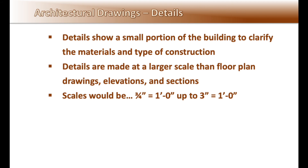Details show a smaller portion of the building to clarify the materials and type of construction. Details are made at a larger scale than floor plan drawings, elevations, and most sections. Typical scales for details would be three-quarters of an inch equals one foot, up to three inches equals one foot, depending on how much detail needs to be shown. A wall section might be three-quarters of an inch equals a foot, while the blow-up of the parapet wall at the top would be one and a half inches equals one foot.